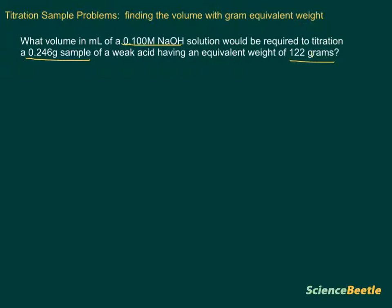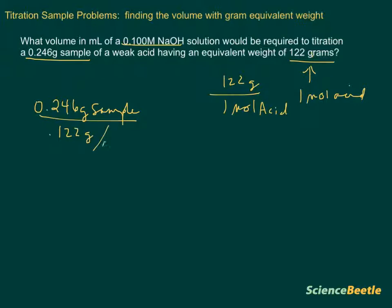Since 122 grams is essentially what is found in one mole of the acid, we can use this as a proportion and start by saying that this is going to be 122 grams per one mole of the acid. We would write HA, but essentially this is the proportion here that we've got, the conversion factor. Since we've got this grams here, what we would need to do is divide the mass that we have, 0.246 grams of the sample, by the equivalent weight.